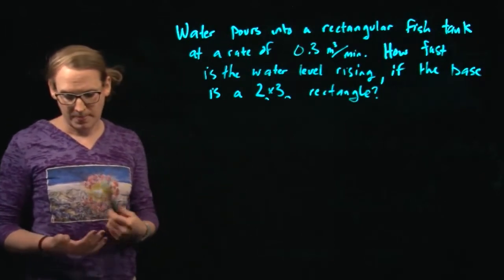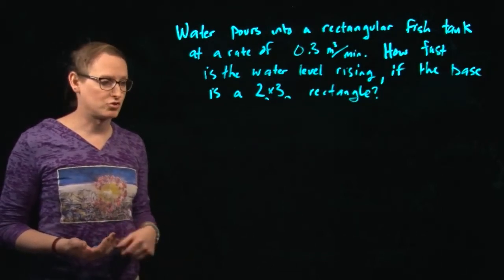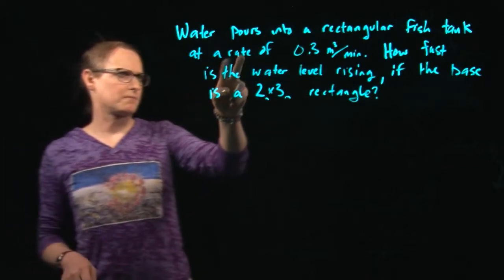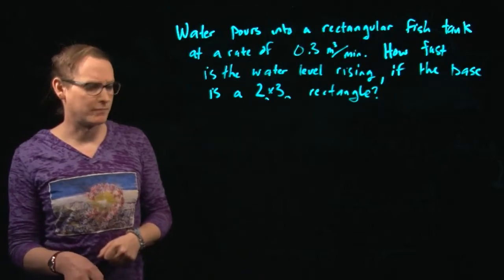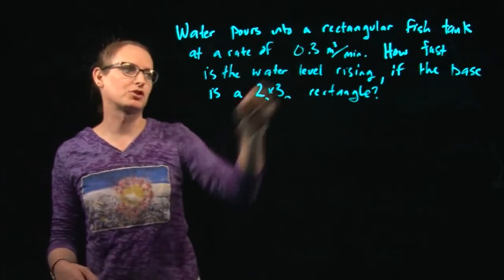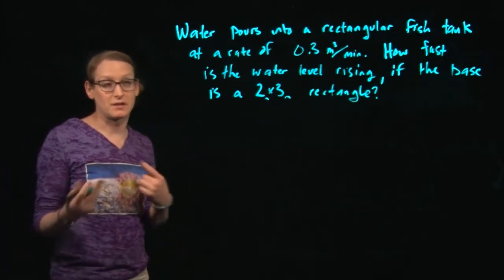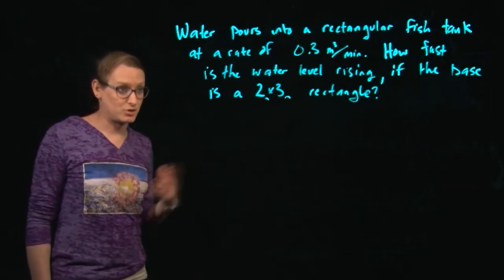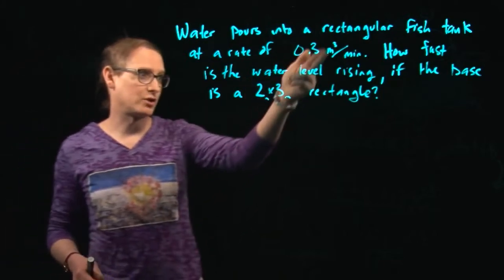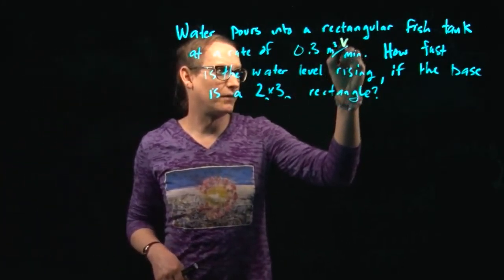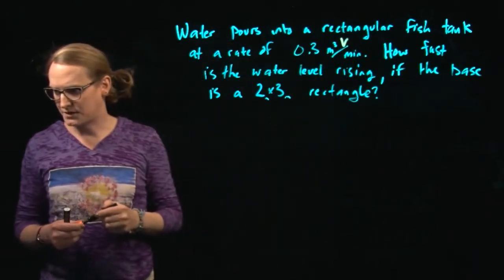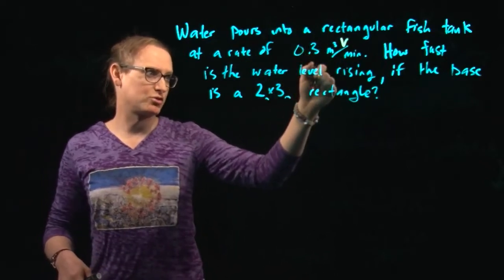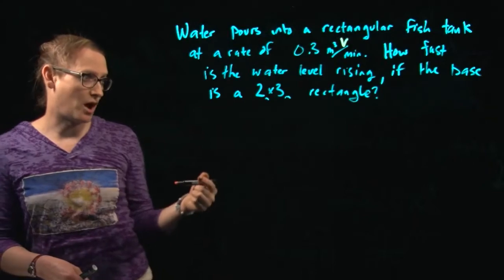So water pours into a rectangular fish tank at a rate of 0.3 meters cubed per minute. So I'm seeing, just jumping out right now at me, meters cubed. Meters cubed is a statement about, is it a length? Is it an area? Is it a volume? Is it a hypervolume? What's meters cubed? What does it measure? It measures volume. So this is a rate of change of volume. So this looks like volume per minute. So it's volume per time. So this quantity right here could very well measure dV/dt, the amount of rate of change of the volume with respect to time. So dV/dt, that's the rate of change of volume. And I was given that, which is really nice.